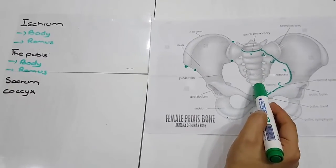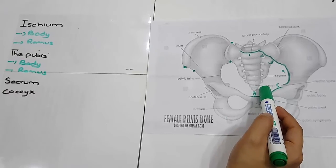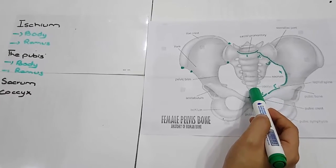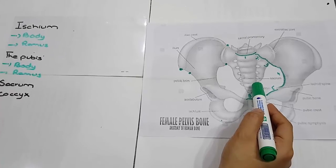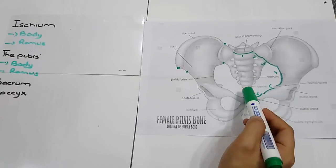This region is known as the coccyx. It is a vestigial tail and it consists of four fused vertebrae forming a small triangular bone which articulates with the fifth sacral vertebra.